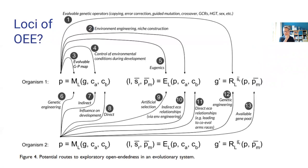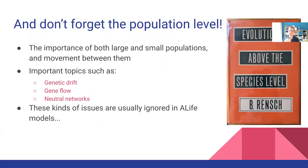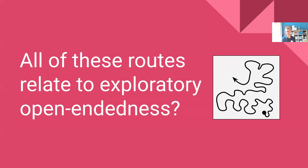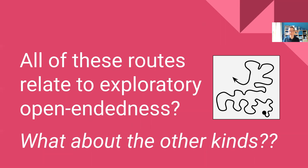In my previous paper I looked at a variety of different mechanisms that are currently commonly discussed in the theoretical biology literature and asked where they got you in terms of open-ended evolution. I also pointed out that that framework didn't include population-level mechanisms, which are also important, like genetic drift, gene flow, and neutral networks. But if you consider all of those mechanisms, it turns out these only really relate to exploratory open-endedness — so you search within a given search space.